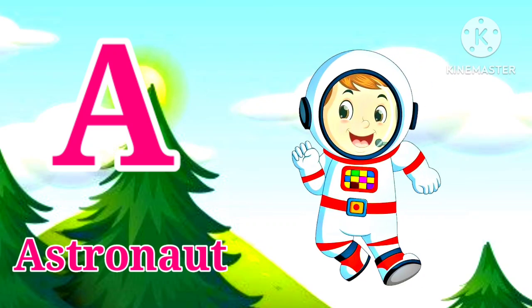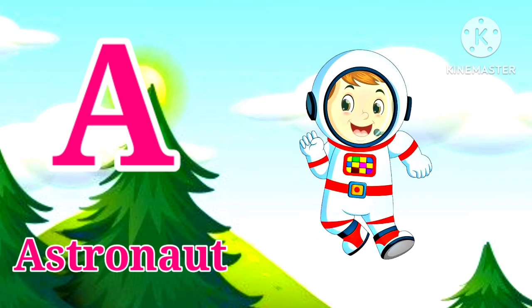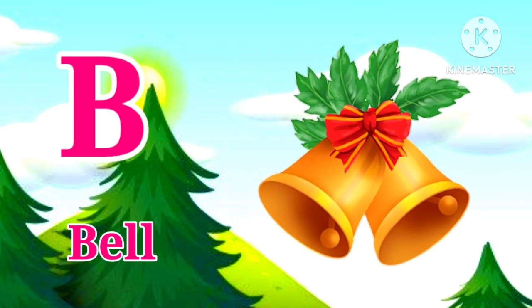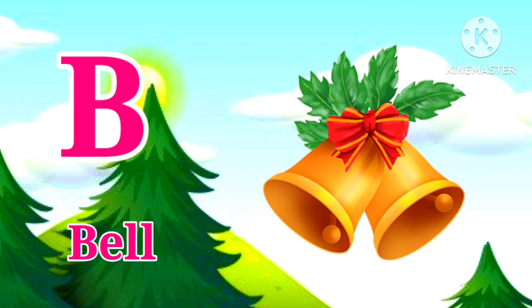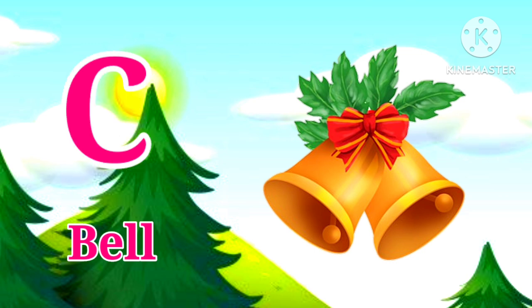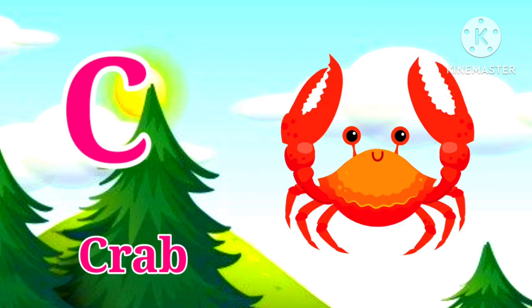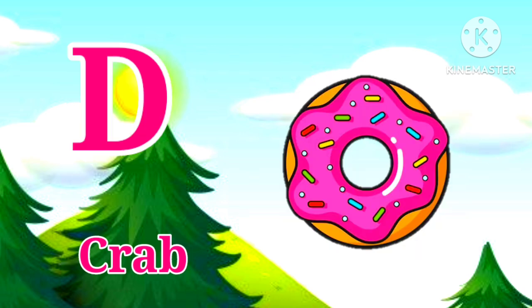A for Astronaut. Astronaut means Antrikshyatri. B for Bell. Bell means Ghanti. C for Crab. Crab means Kekra.